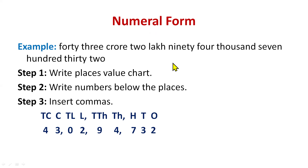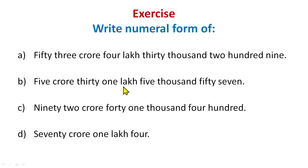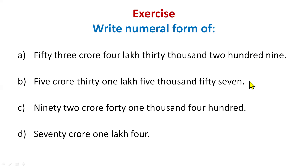So to summarize numeral form: first write all the places, then write the digits under the correct places after reading the question carefully — this way your numeral form will never be wrong. Now it's your time for practice. Write the numeral form of: 53 crore, 4,30,209. Write your answers in the comment section. I'll check your answers later.